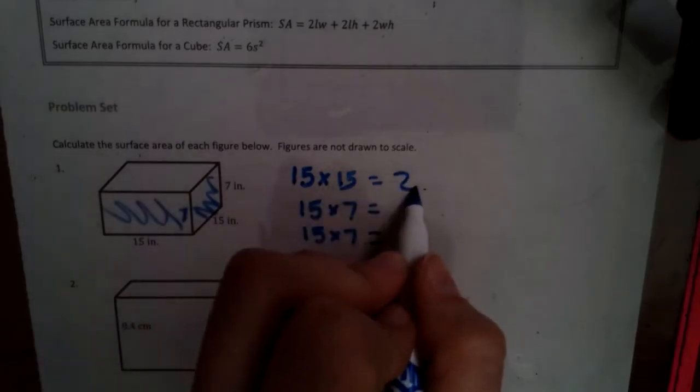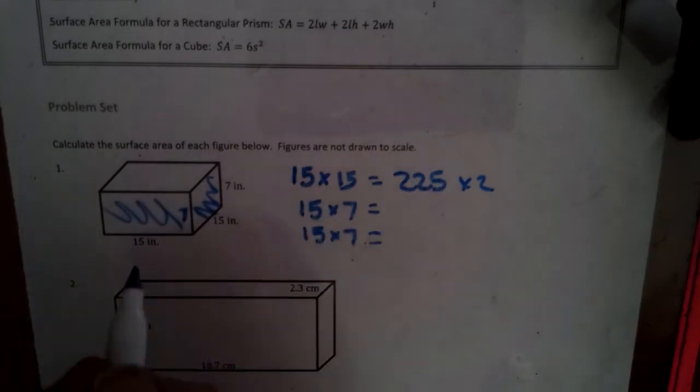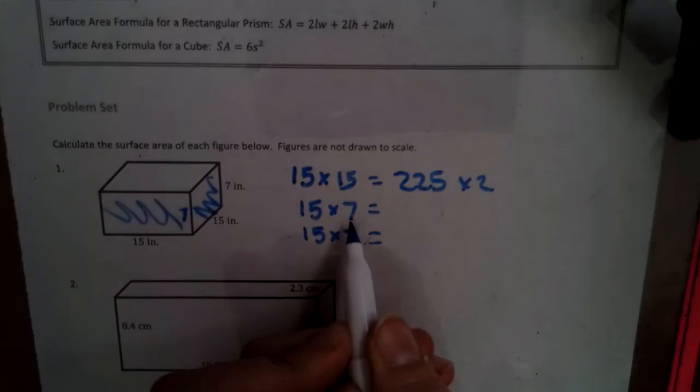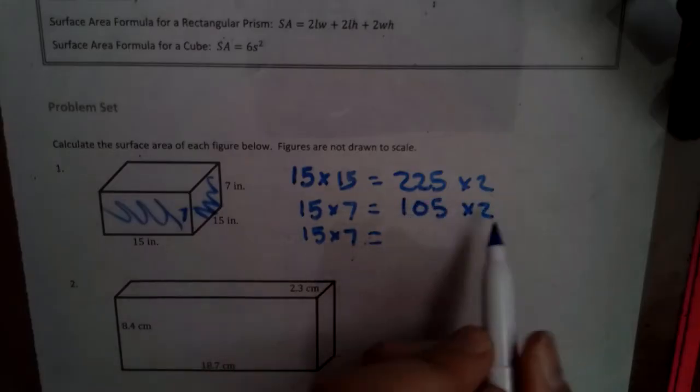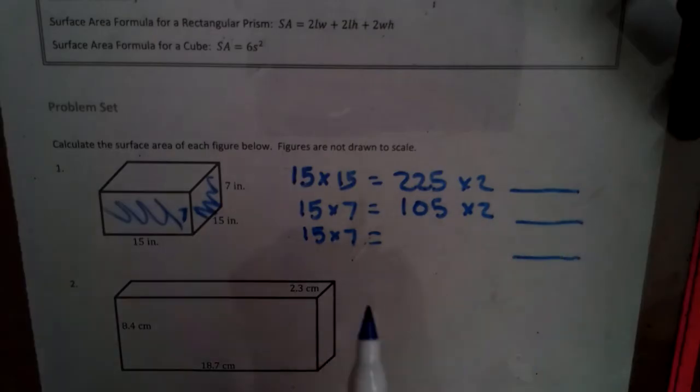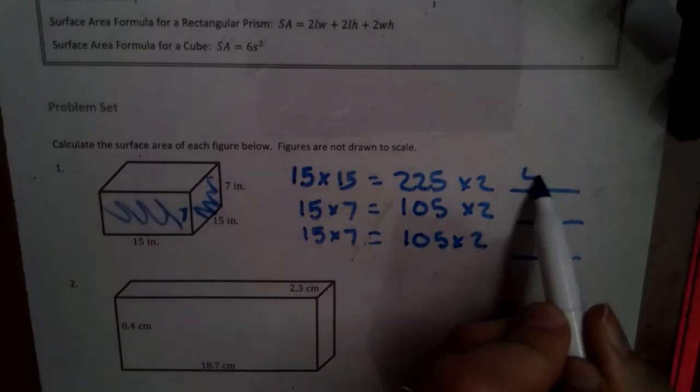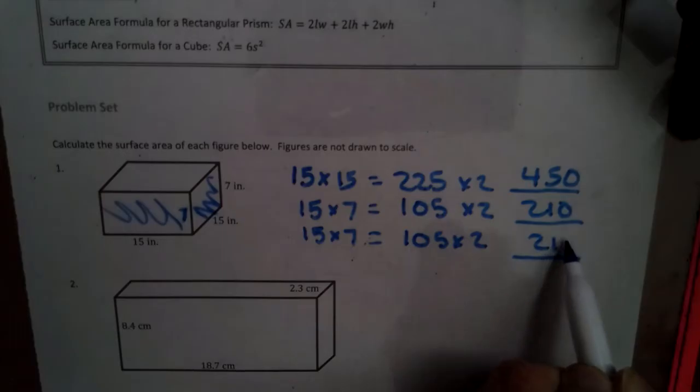So 15 times 15 is 225. So I'm just going to put times 2 because when we have a bottom, there's a top. So 15 times 7 is 105. And when we times that by 2, we'll get a new number. Then we're going to take these new numbers and we're going to add them all together. And 15 times 7 again is 105. We double it. So we have 450, 210, 210.